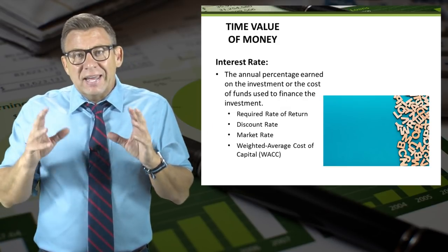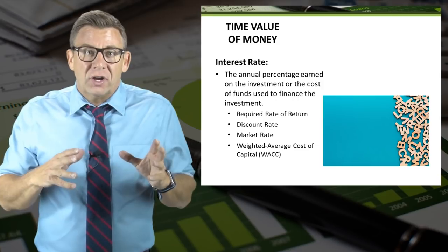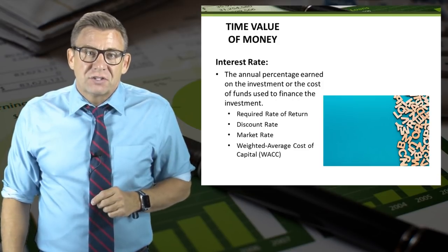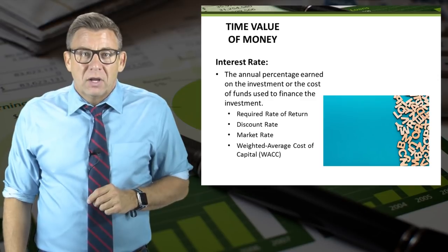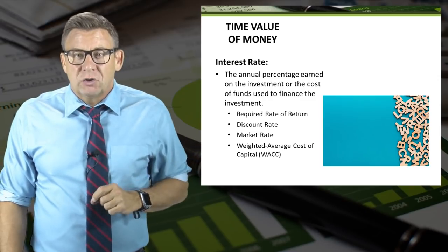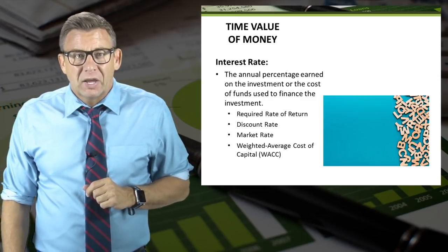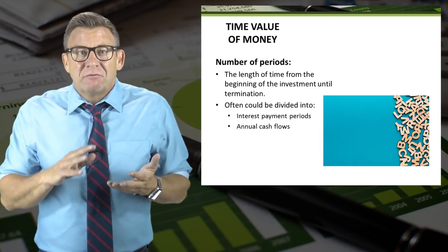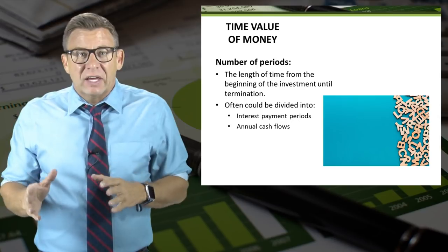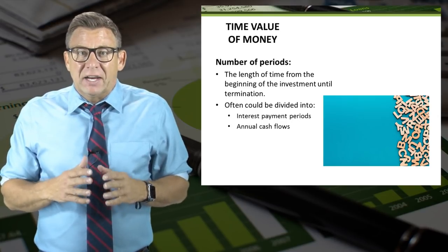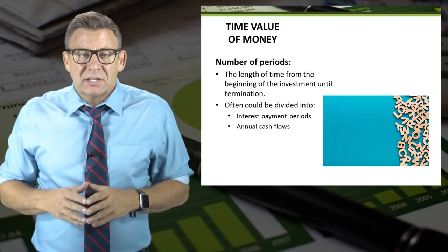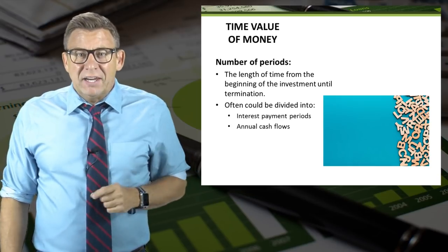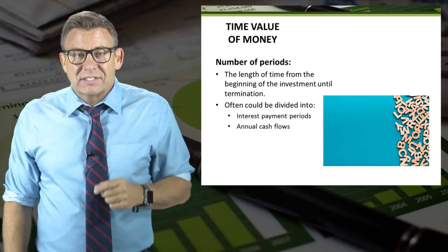The interest rate is the annual percentage earned on the investment or the cost of funds used to finance the investment. It has some other names that are shown on the slide. Finally, the number of periods is the length of time from the beginning of the investment until the end — it could be divided into interest payment periods or annual cash flows. You will be seeing these terms in action in the next several videos.